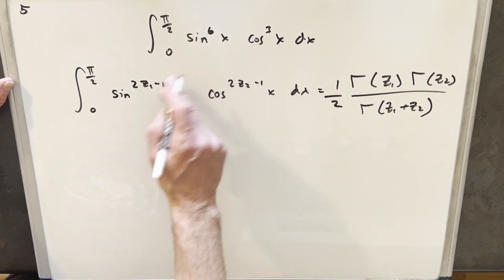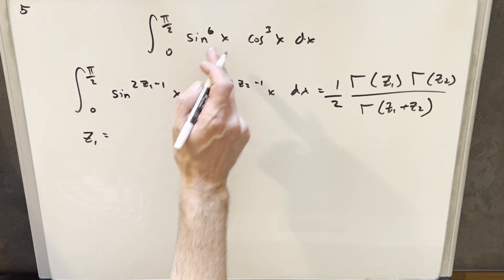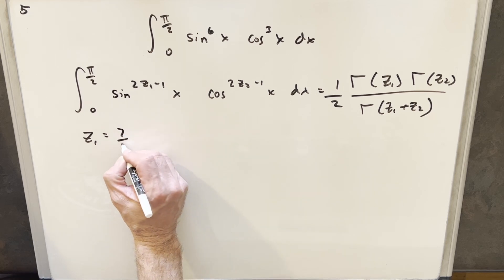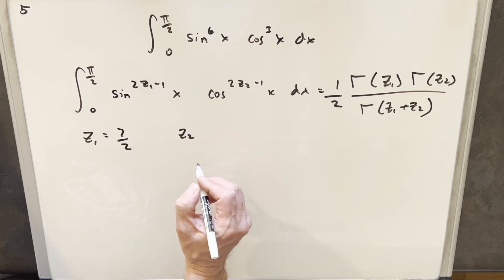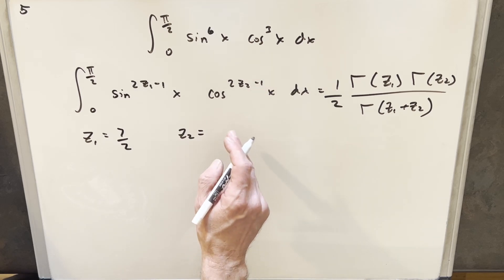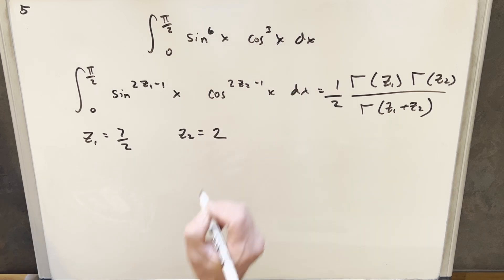And then what I'm going to do here is solve for z1 and z2. So we need to equate 2z1 - 1 = 6. If we do that and solve for z1, we find that z1 is 7/2. And then for our z2 value, same thing, just solving for 2z2 - 1 = 3, we find that z2 = 2.